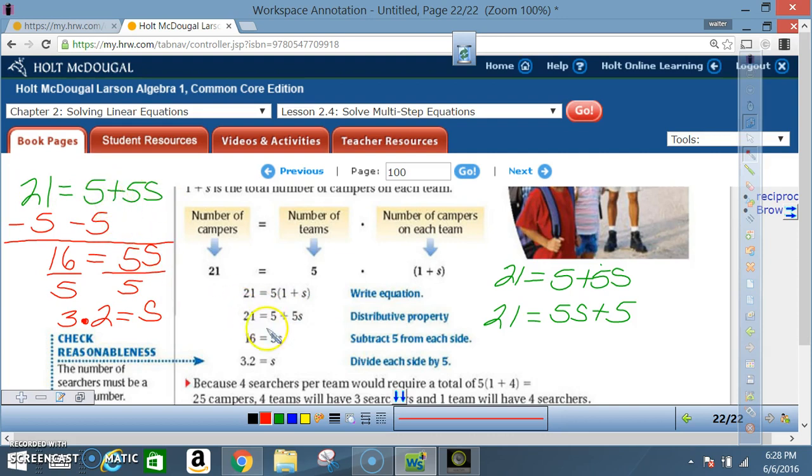Okay, now we're going to subtract 5 from each side. So I'm going to take this equation and write it up here so you can see it. We got 21 equals 5 plus 5s. This is a positive 5, so to get rid of it I must put down a negative 5 and a negative 5. That means this is going to cancel out, so now I bring down the 5s.